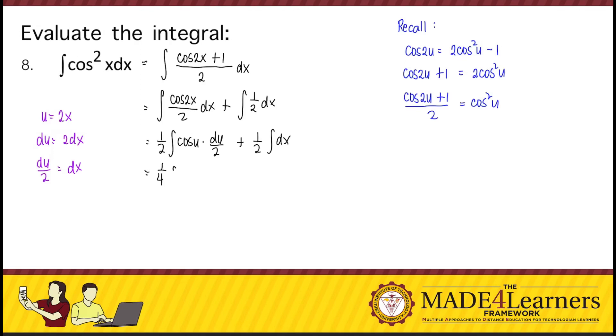Integrating, that's 1 fourth. The integral of cosine is positive sine. So, that's sine u. And the integral of dx is x. So, 1 fourth sine u plus 1 half x plus c. But u is equal to 2x. So, 1 fourth sine of 2x plus 1 half x plus c. Here we go.